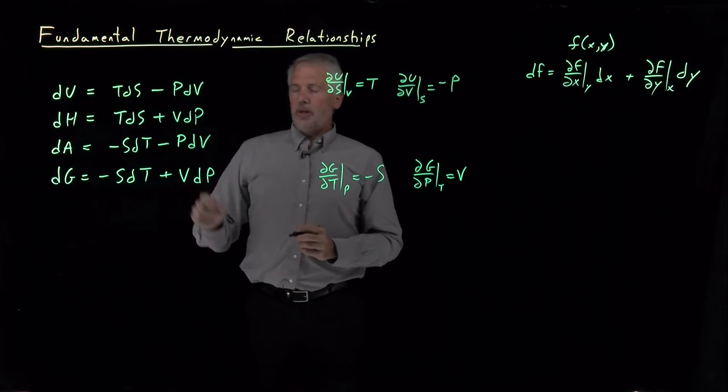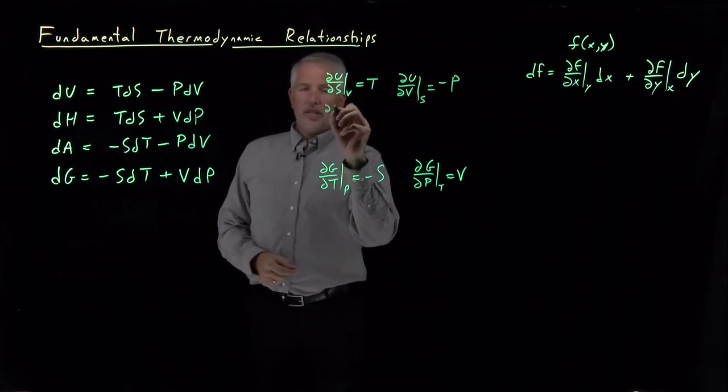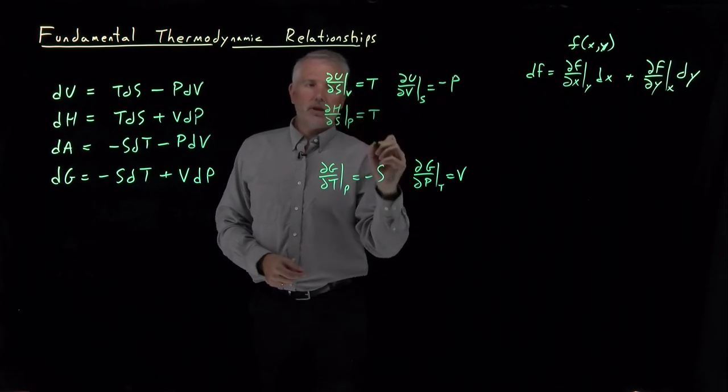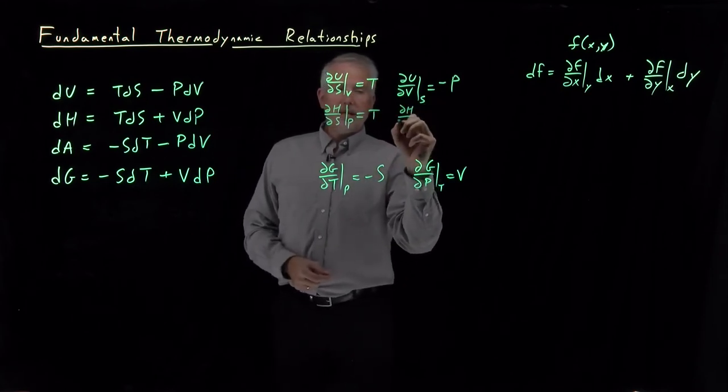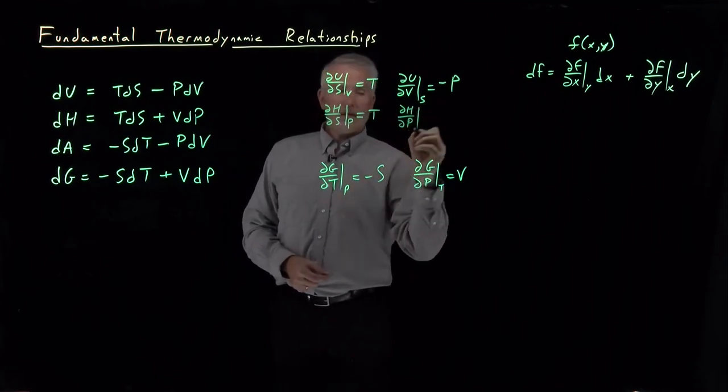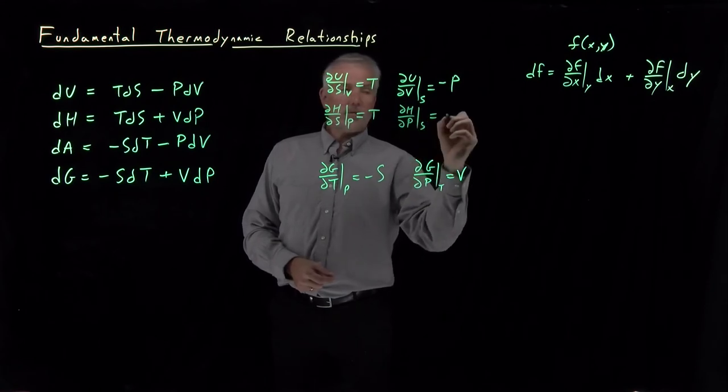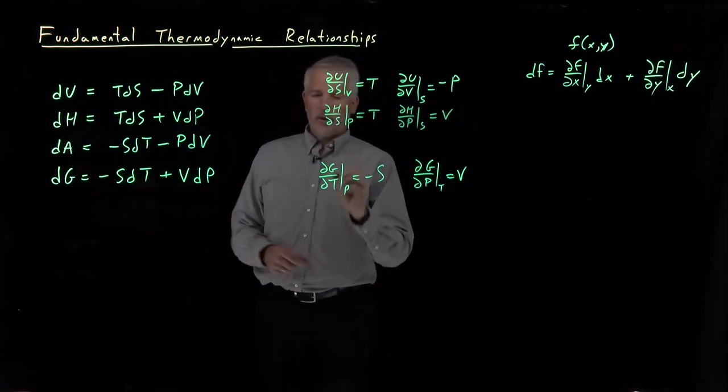The enthalpy equation proceeding similarly, dH/dS at constant p is equal to temperature. dH/dP at constant entropy is equal to volume. And then for the third one,